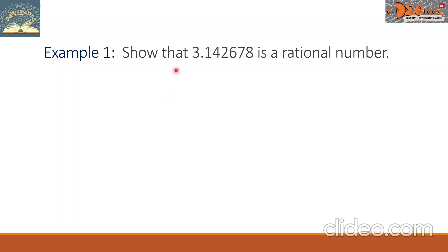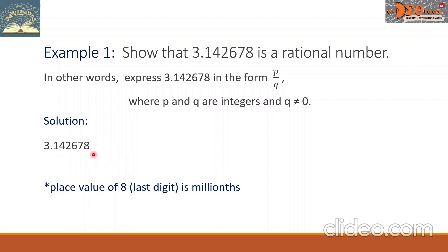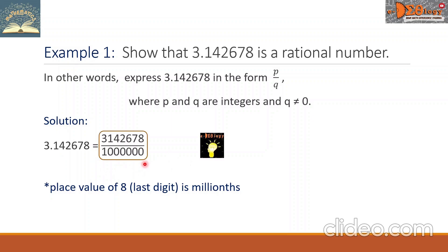Example 1: show that 3.142678 is a rational number. In other words, express 3.142678 in the form P over Q, where P and Q are integers and Q is not equal to 0. So we write the value here. Take note that the place value of 8, that is the last digit, is millionths. So we write this number as the numerator without the decimal, and in the denominator we write one million. This is the answer.